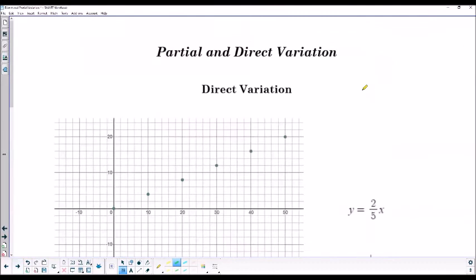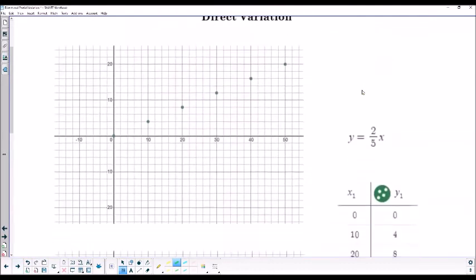If we move over to direct variation, we'll see that the graph crosses at the origin. As in the table of values, it has 0, 0 as the ordered pair. And we don't have the multiple part. So there's no constant added here. We don't have the y-intercept. What we do have is just the multiple part. So we only have that multiple term. That is still considered the variable term.